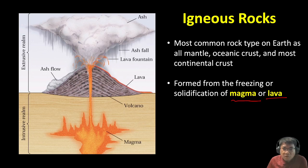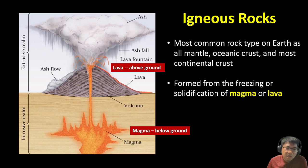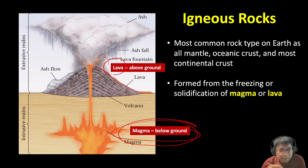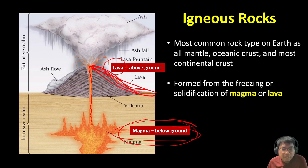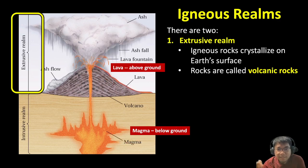Igneous rocks form from the freezing or solidification of either magma or lava. Magma is molten rock present inside the earth, or below the ground. Lava is the same molten material that has reached the surface of the earth — it is present above the ground. That is the main difference between magma and lava.